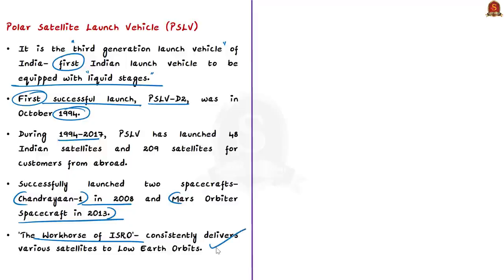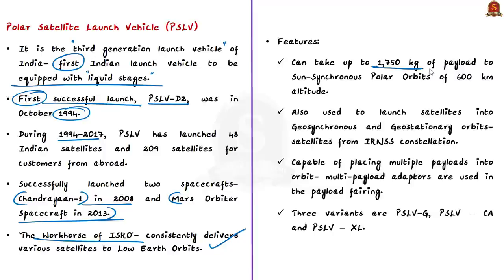PSLV earned its title the workhorse of ISRO through consistently delivering various satellites to the low Earth orbits particularly the Indian remote sensing series of satellites. It can take up to 1750 kilograms of payloads to sun-synchronous polar orbits of 600 kilometer altitude. Due to its unmatched reliability, PSLV has also been used to launch various satellites into geosynchronous and geostationary orbits like the satellites from the IRNSS constellation. PSLV has three variants which are PSLV-G, PSLV-CA and PSLV-XL. The payload fairing is the equipment used to protect the spacecraft during the early portion of the boost phase.